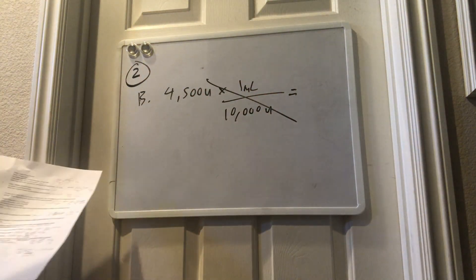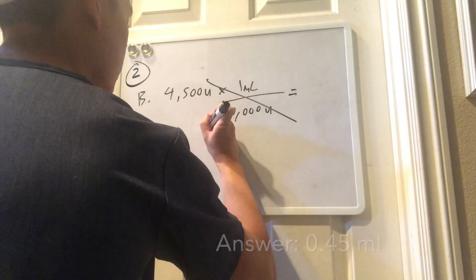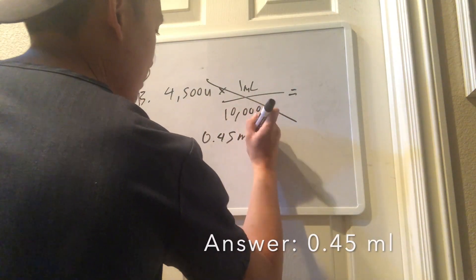So, if we set it up so that we put the 10,000 units on the bottom per mL, cross off the units, you'll be left with 0.45 mLs.